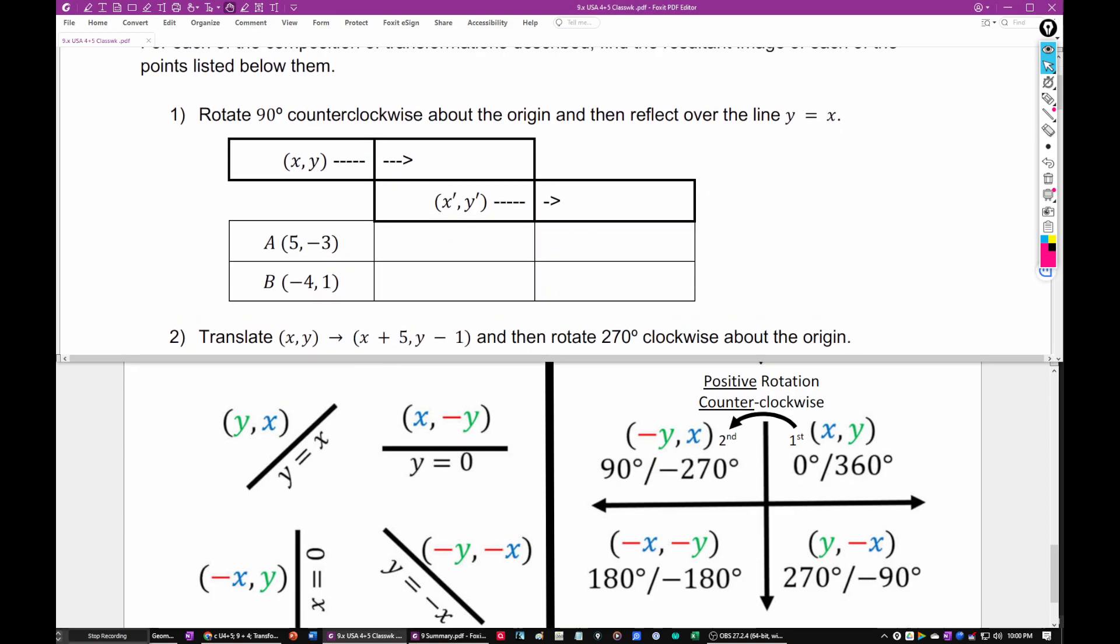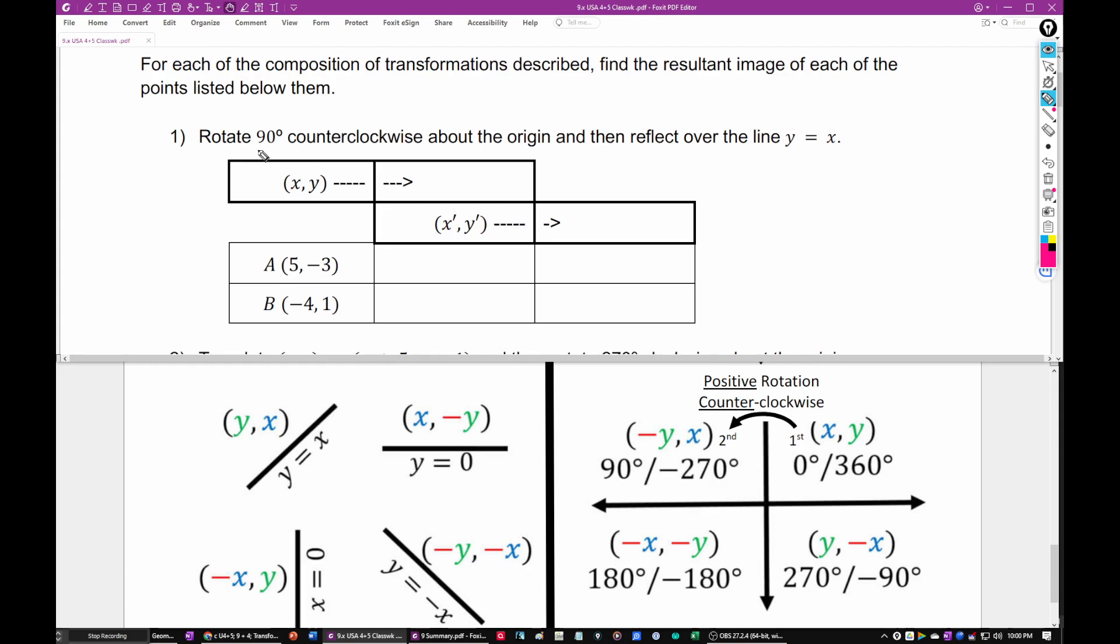So this first one asks us to rotate 90 degrees counterclockwise. You guys remember that a counterclockwise rotation is positive rotation. So our rule of transformation is this guy here. We're going to put opposite of y comma x. I've actually not done this. I'm throwing this video together very quickly, so I may make some mistakes.